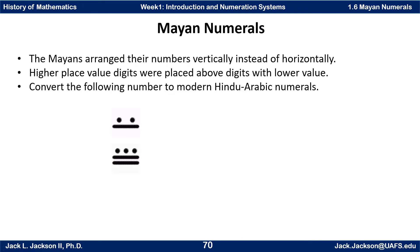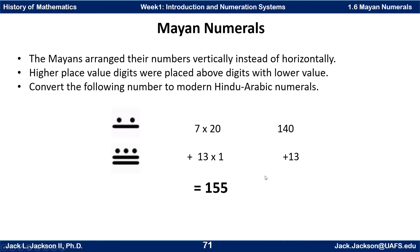Convert this to modern Hindu-Arabic numerals. Press pause and come back when you have it. The bottom is five, ten, eleven, twelve, thirteen units — thirteen ones, which is just thirteen. The upper part is five, six, seven groups of twenty, which is one hundred forty. Add those together and that's one hundred fifty-three.